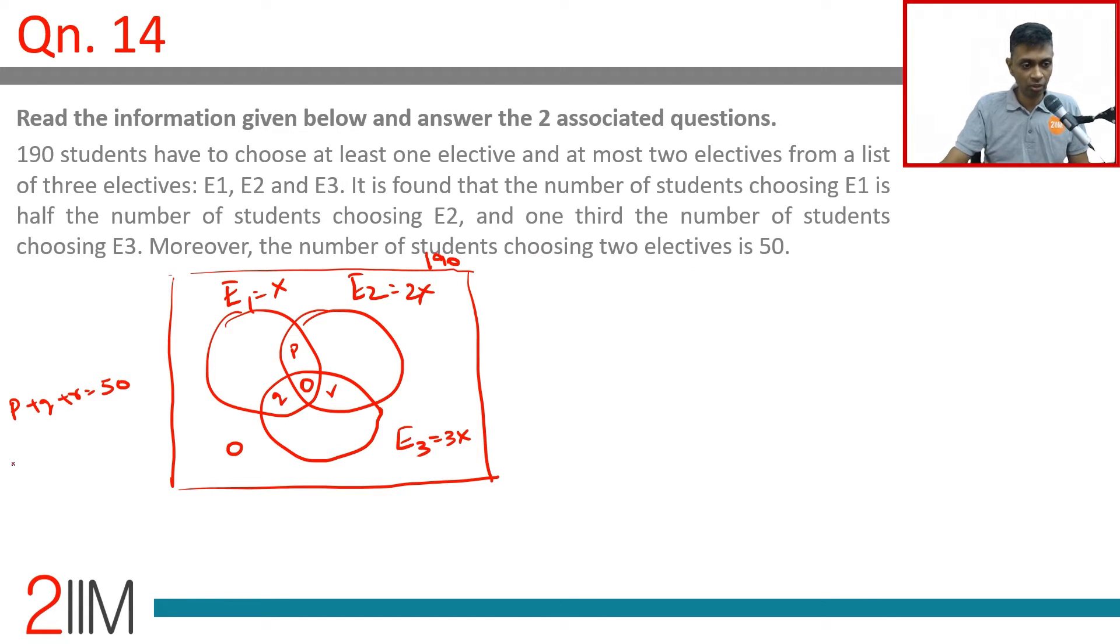So we know e1 union e2 union e3 is 190. Lovely. So e1 union e2 union e3 is e1 plus e2 plus e3 minus e1 intersection e2, which is p, plus e1 intersection e3 or e2 intersection e3, which is q plus e1 intersection e2 intersection e3.